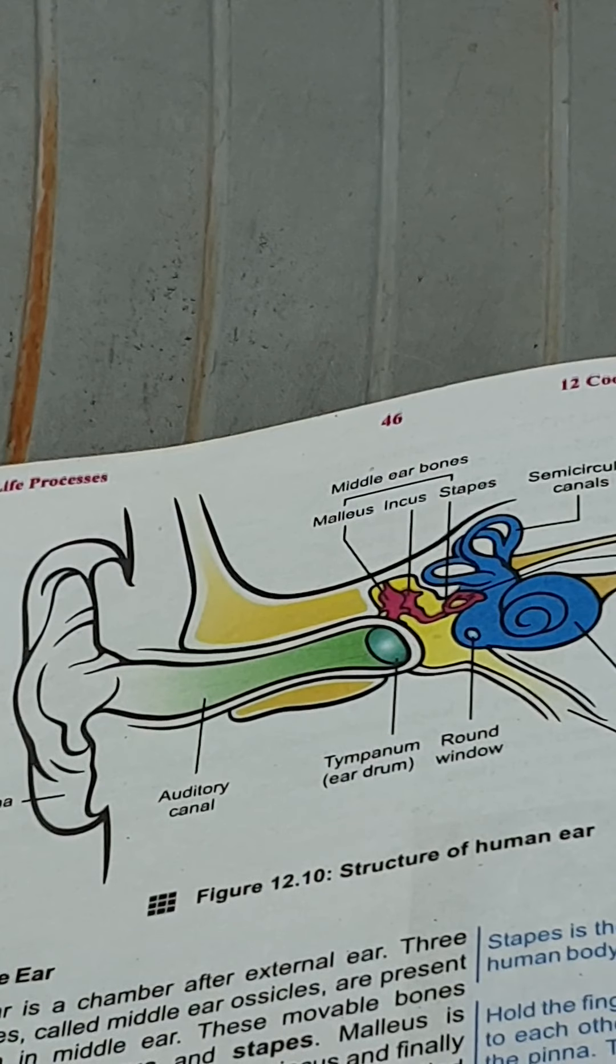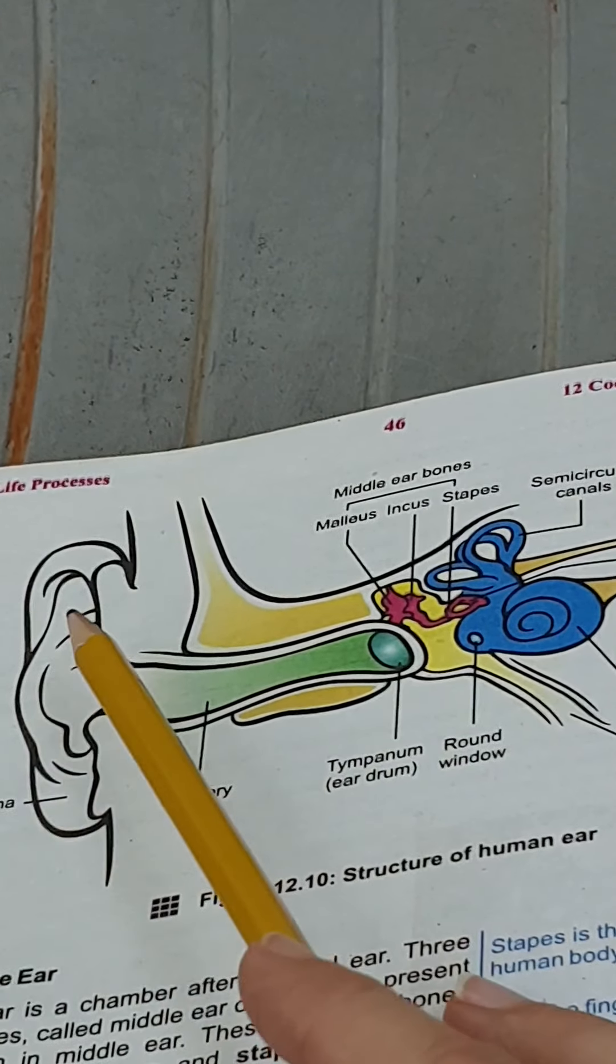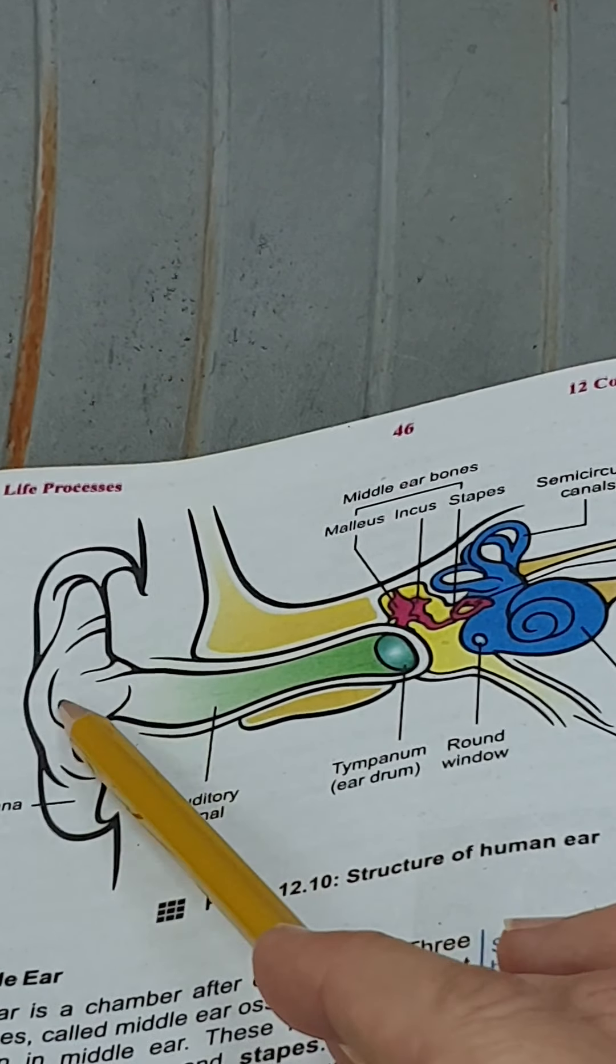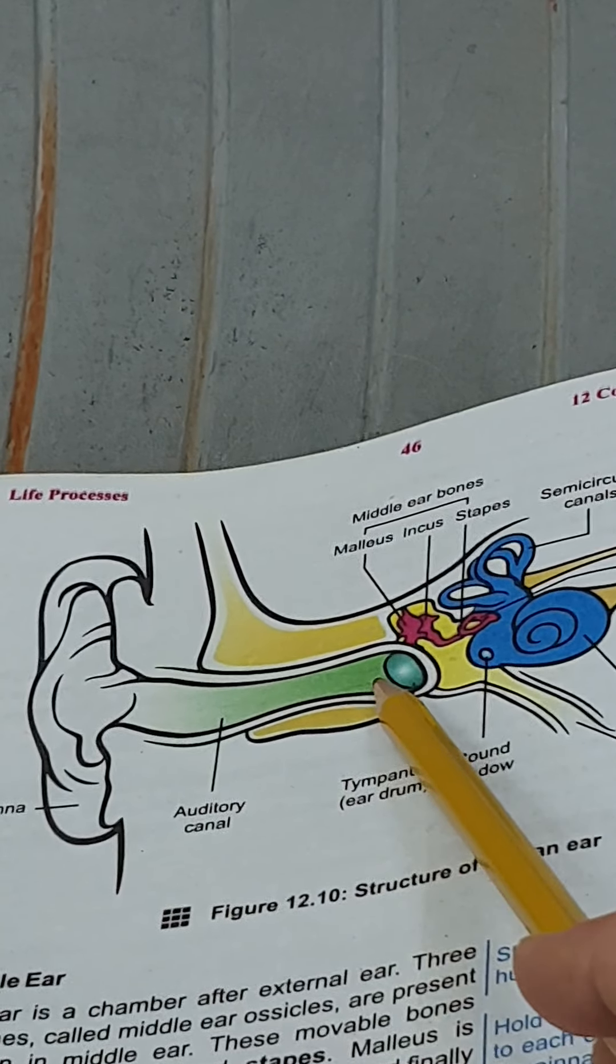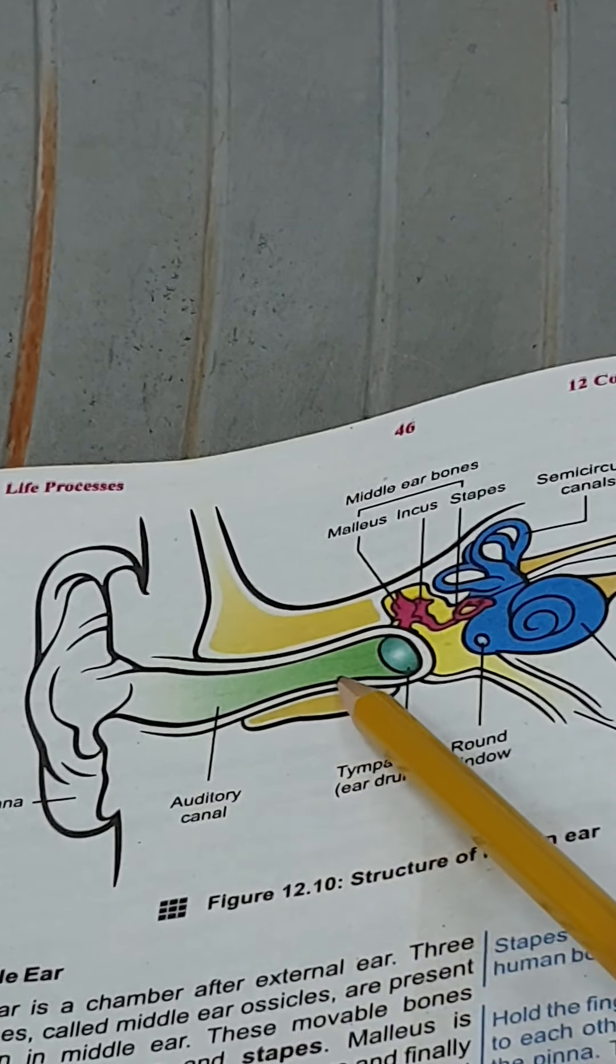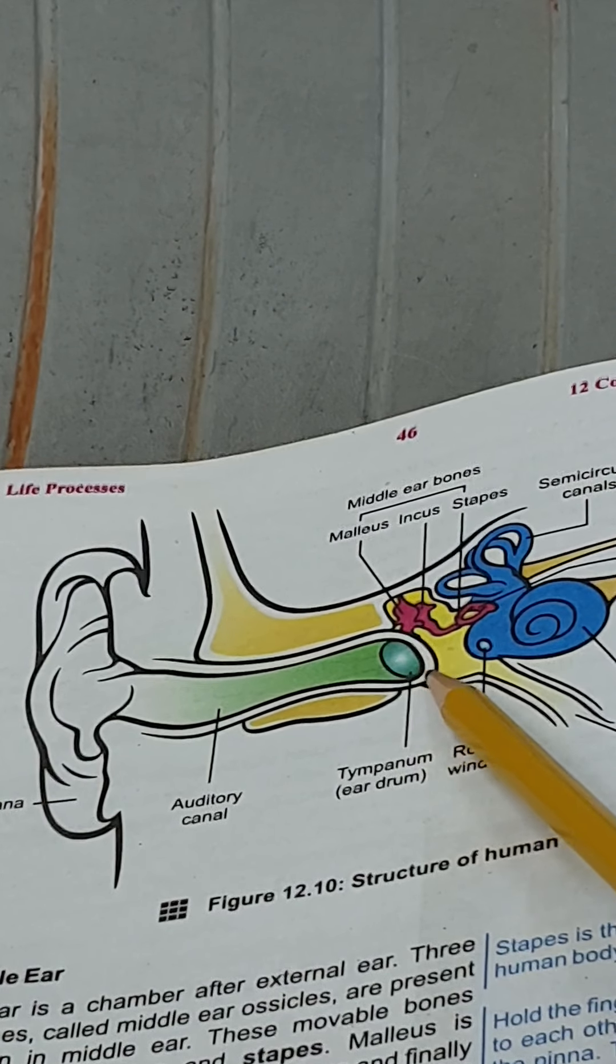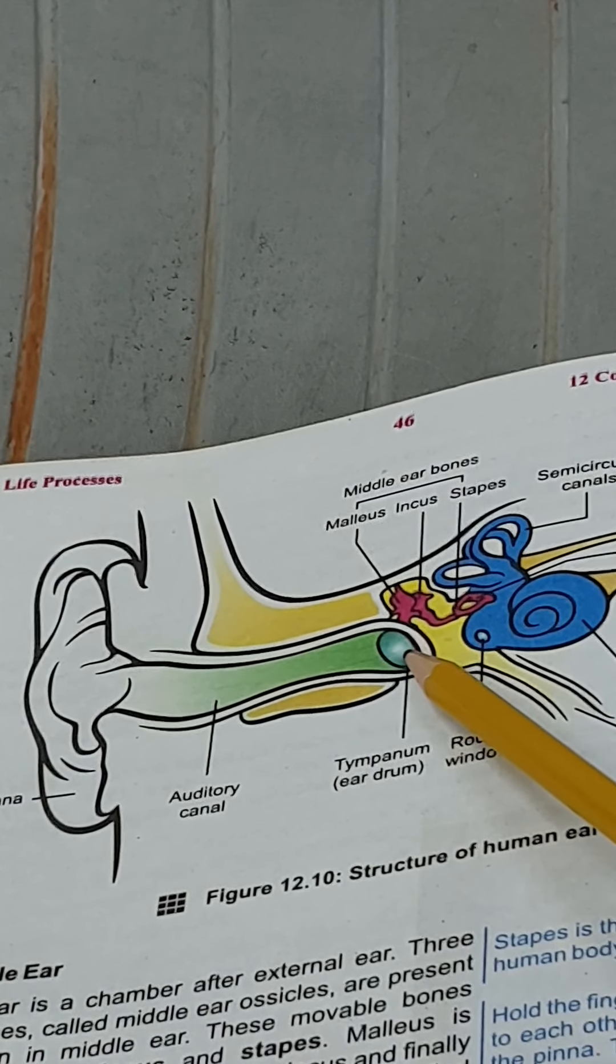Now we will discuss how the process of hearing occurs. First of all, sound waves are collected by the outer ear pinna. Pinna puts those sound waves into the auditory canal. When passing from the auditory canal, it touches the tympanum or eardrum, and the tympanum starts vibrating.